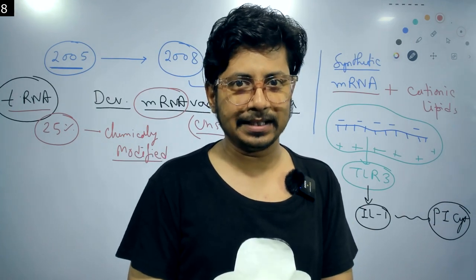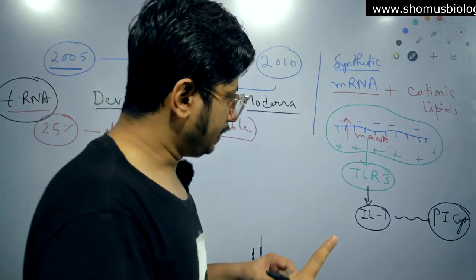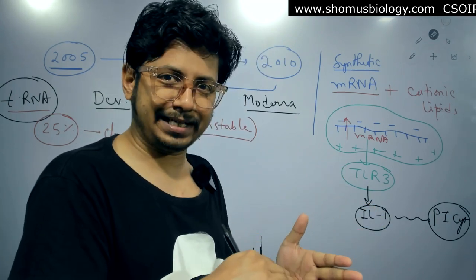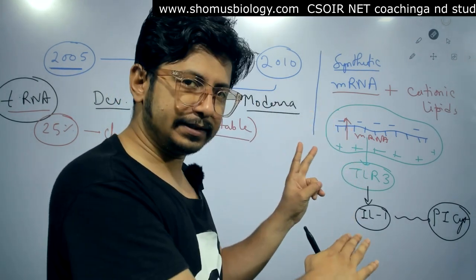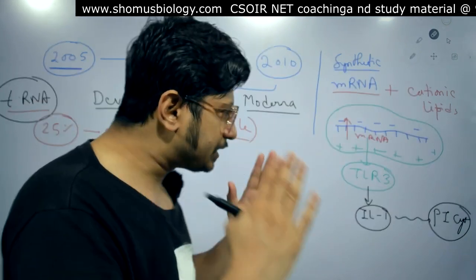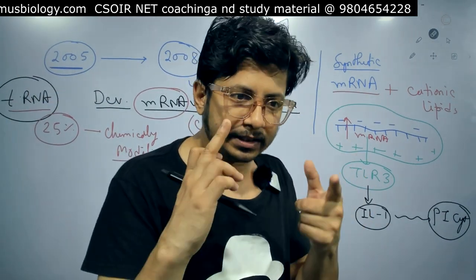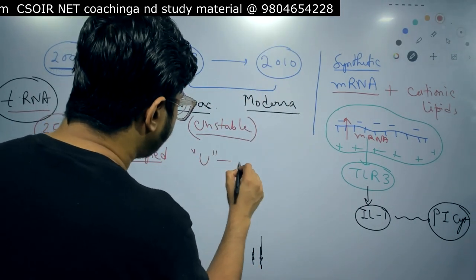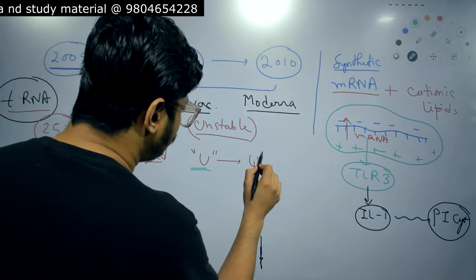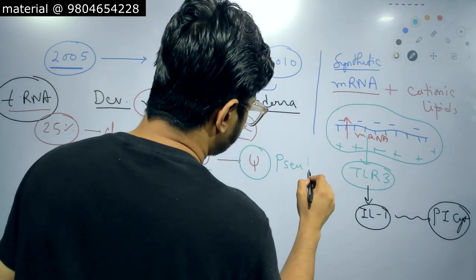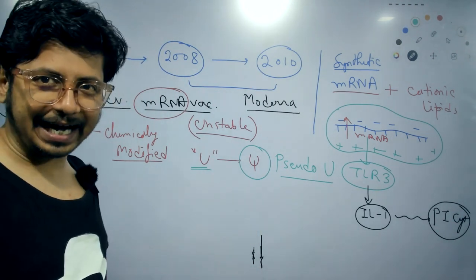What could they do to increase the stability of synthetic mRNA so the immune system response wouldn't be as effective against it? There were two challenges: one, make mRNA more stable; two, prevent the immune response against it. To achieve that, they modified the synthetic mRNA bases. The easiest modification they found was modifying the uracil of RNA into pseudo-uracil. This small modification led to the groundbreaking discovery that fetched them the Nobel.